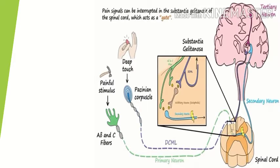The path of pain signals can be interrupted in the substantia gelatinosa of the spinal cord, which acts as a gate. This happens when a non-painful stimulus such as deep touch activates pacinian corpuscles located in the dermis of the skin. This can be done by rubbing the area.